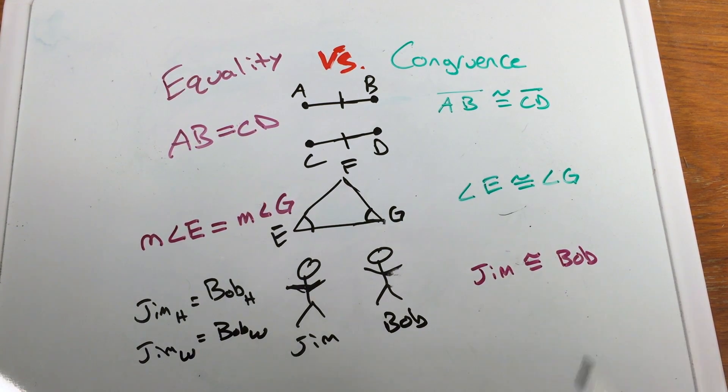This isn't proper notation here. I'm just referring to an analogy. Again, Jim and Bob, they can have equal height, they can have equal weights because those are values that we can measure. We can add, subtract, multiply, divide, we can use those numbers in normal mathematics. But them themselves, we can't say that Jim and Bob are equal. They are congruent because we cannot add Jim plus Bob. We can't add people together, but we can add their height, add their weight.